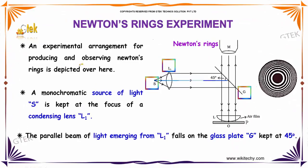An experimental arrangement for producing and observing Newton's rings is depicted here. A monochromatic source of light is kept at the focus of the condensing lens L1.